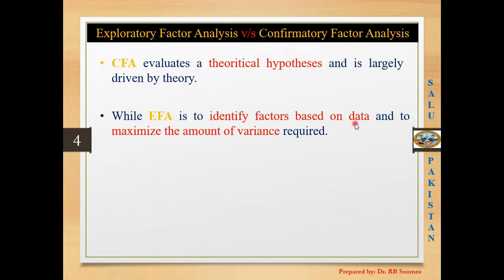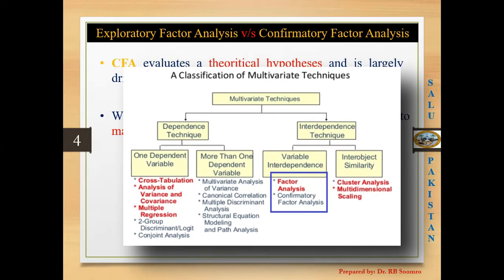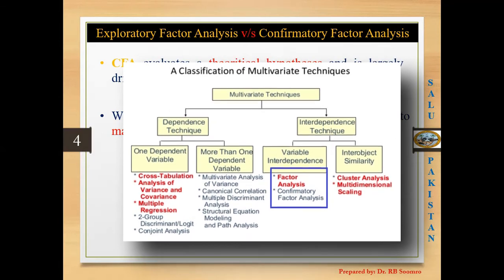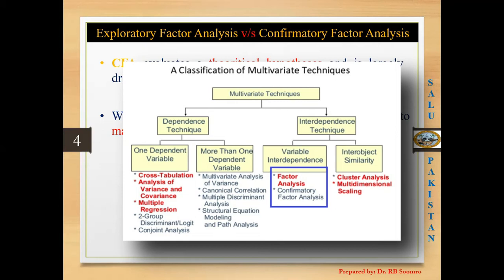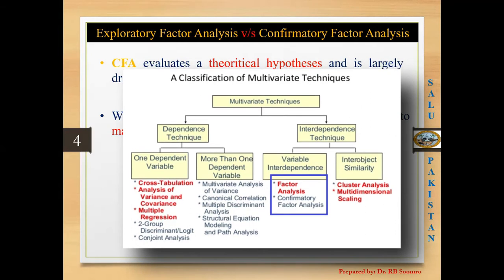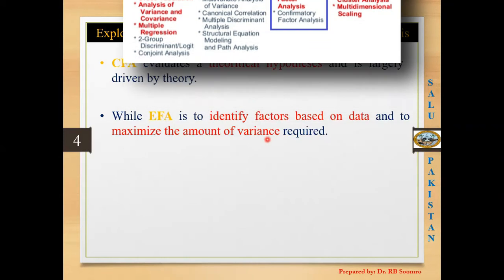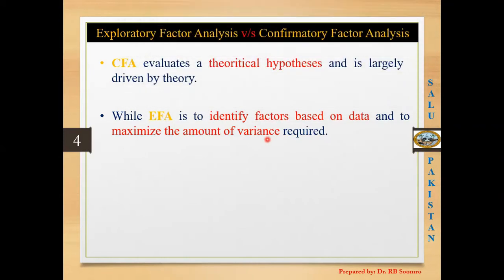In the case of EFA, we identify factors based on the data — we extract the factors from the given data. That is why EFA is driven by the data. Its job is also to maximize the amount of variance among the different variables. EFA is part of the interdependent technique, where every variable depends on each other, as opposed to dependence techniques like regression where some variables depend on others.